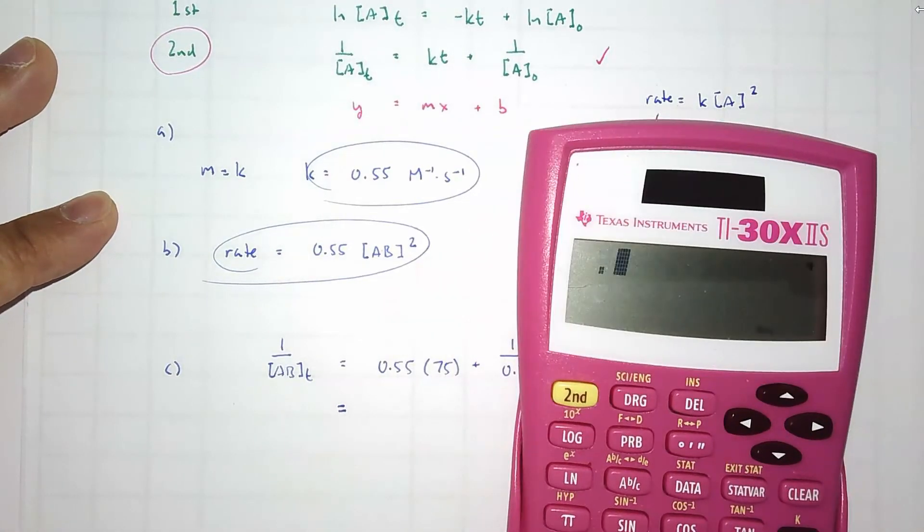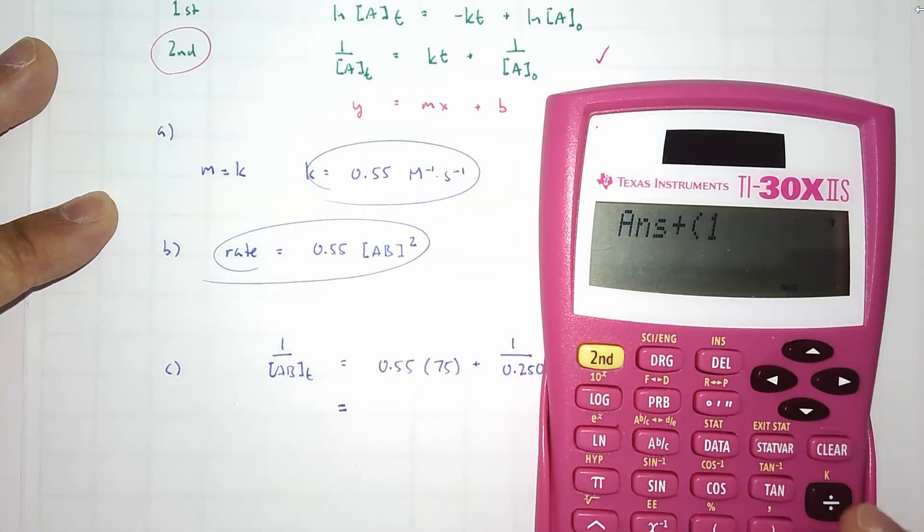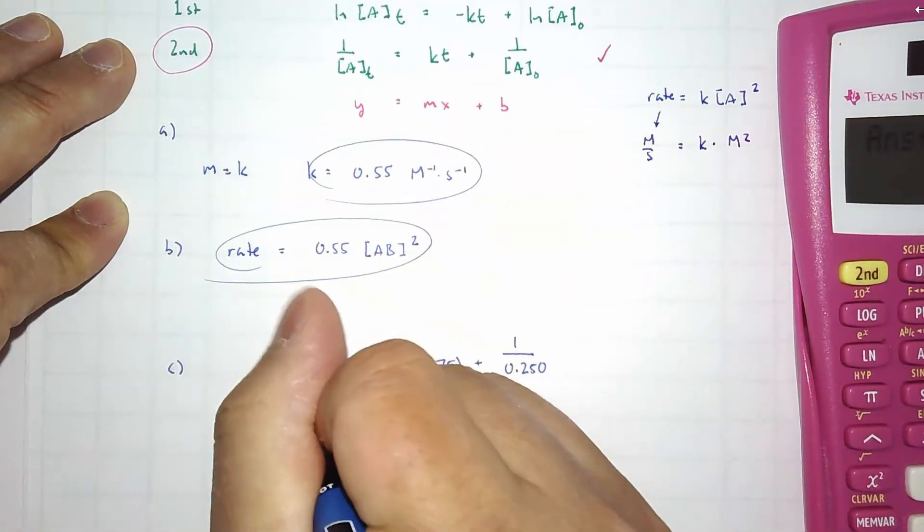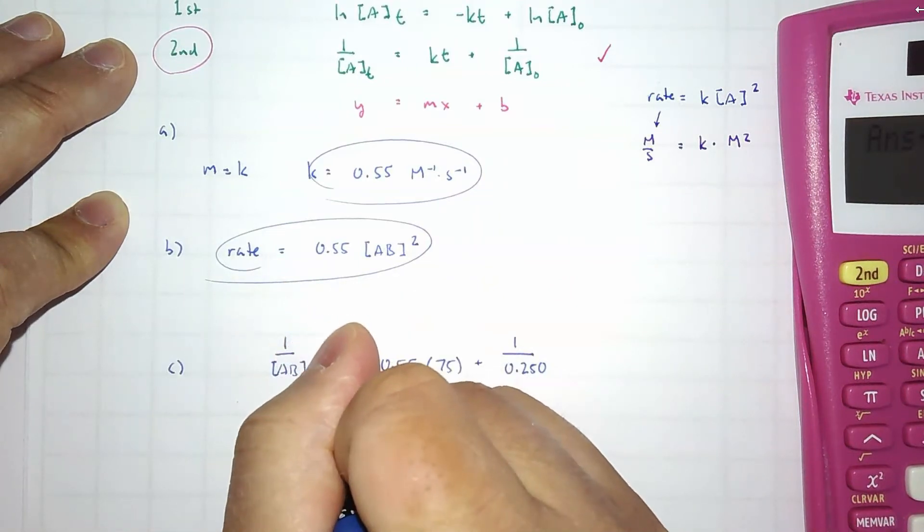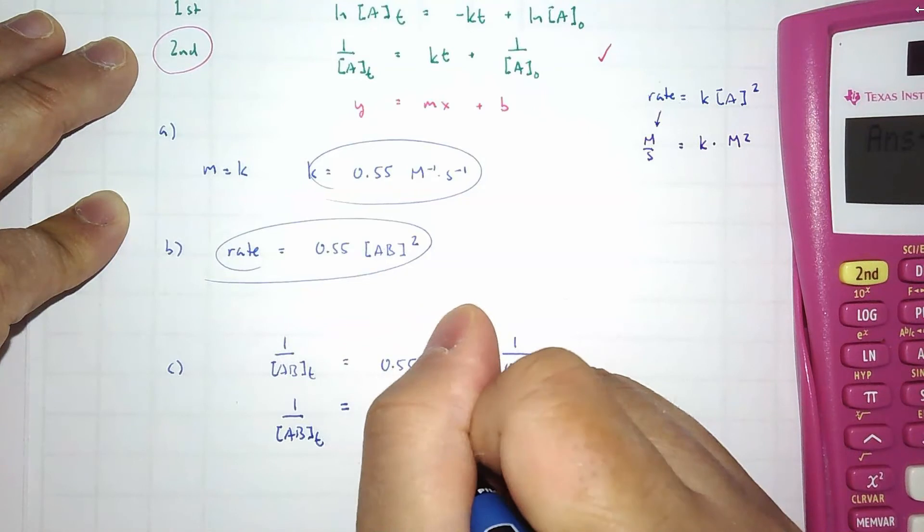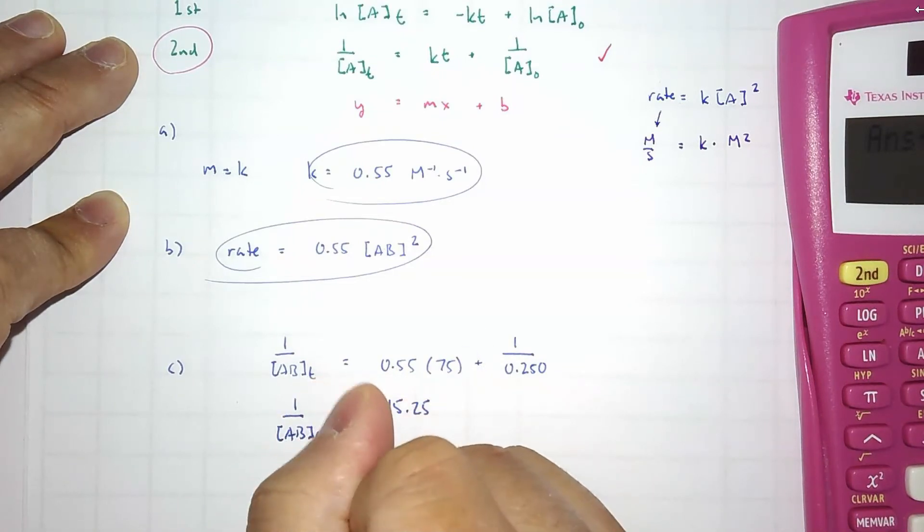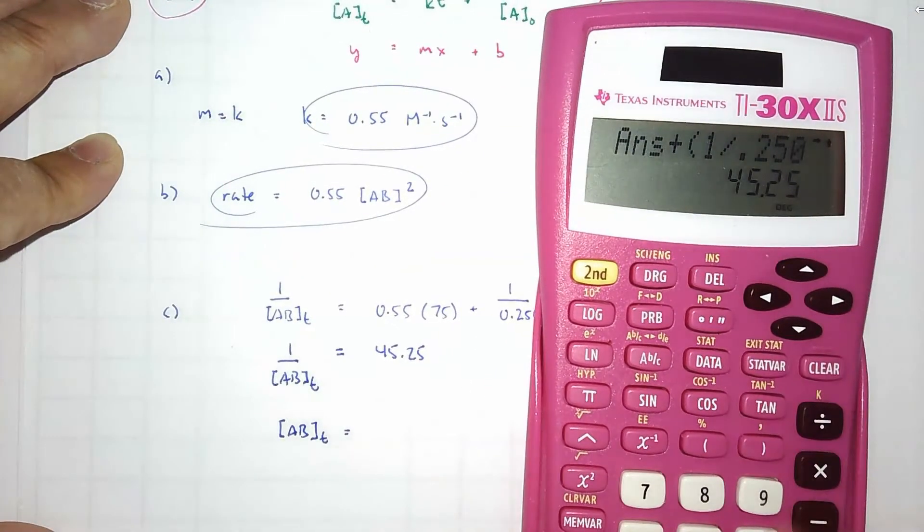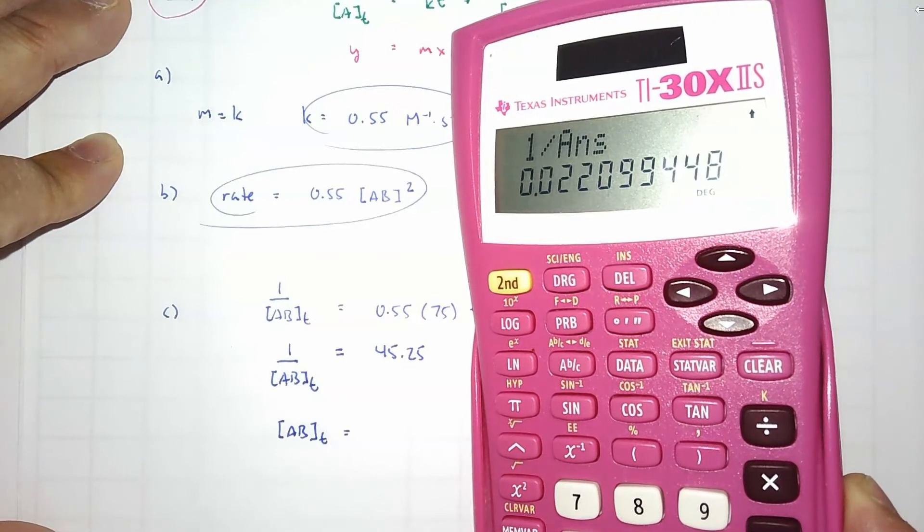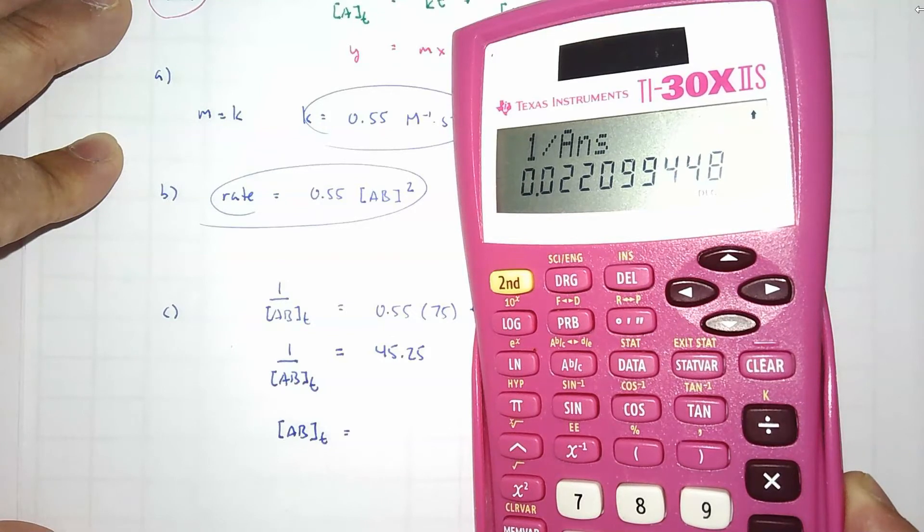Let us combine terms. Let's do 0.55 times 75 plus 1 divided by 0.250. 45.25. 1 over this concentration at time equals 75 equals 45.25. And we take the inverse, or we cross multiply, or however we want to think about it equals 1 divided by that answer. I have 0.022 molar.